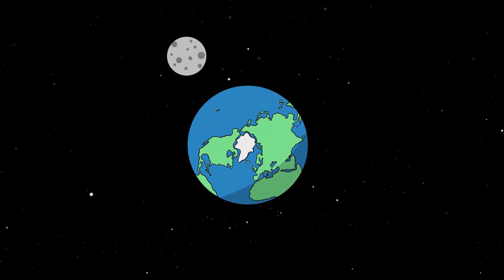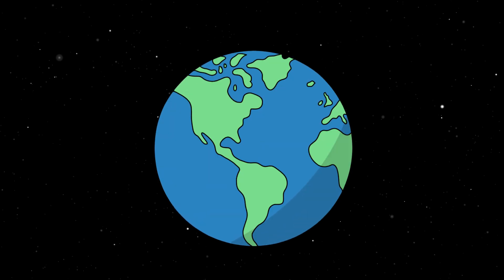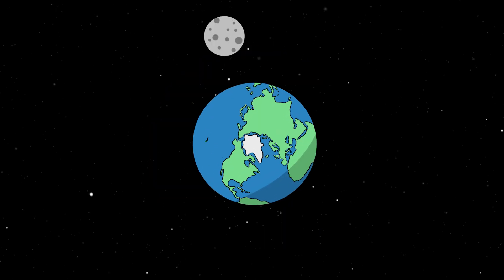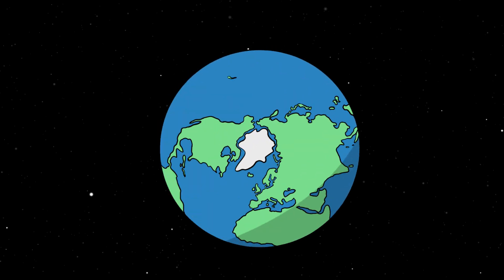The moon also slows down Earth's rotation. A few billion years ago, days were only a few hours long because Earth was rotating way faster. Without the moon, Earth would stop rotating slower, days would become shorter again and the climate would change drastically. We would have much stronger winds, for example.